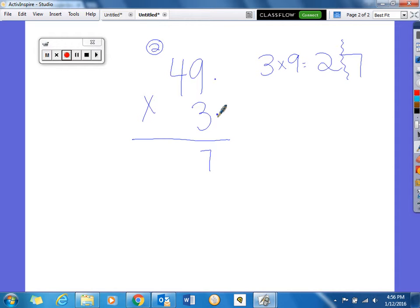Then we're going to do 3 times 4, which we know equals 12. But we can't forget about the 2 that we carried over, so we're going to add that 2 to our 12. So 12 plus 2 equals 14. Our answer is 147. So 49 times 3 equals 147.